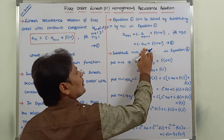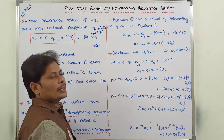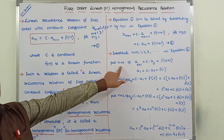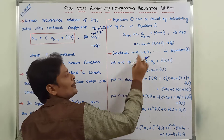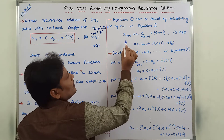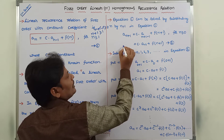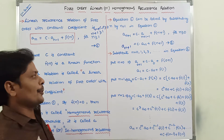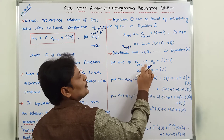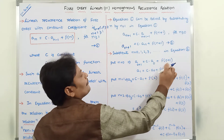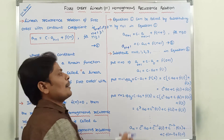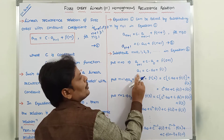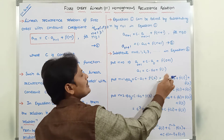Now substituting n = 0, 1, 2, 3, and so on into equation 2. Putting n = 0: a_{0+1} = c · a_0 + f(0+1), which gives a_1 = c · a_0 + f(1).